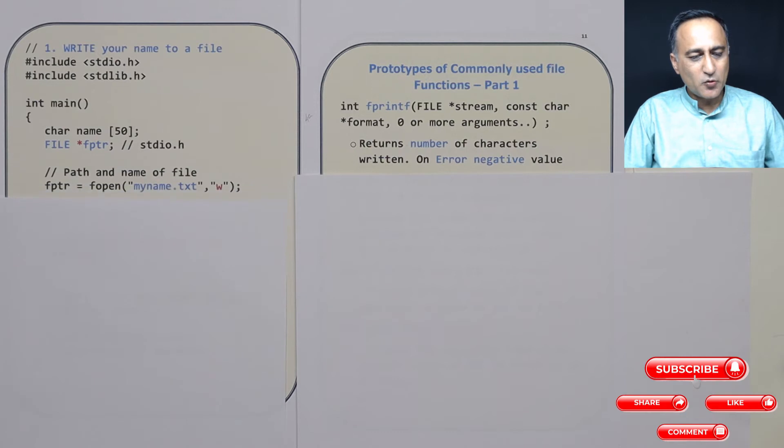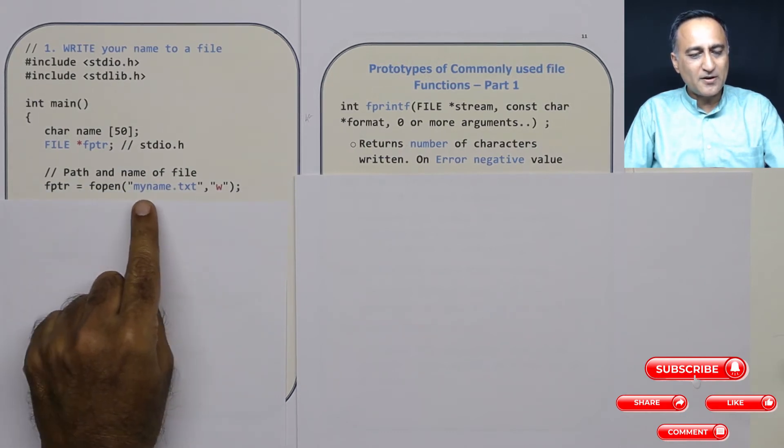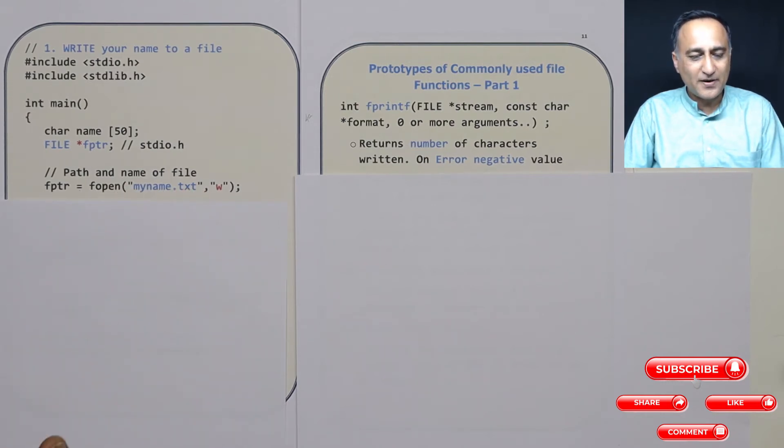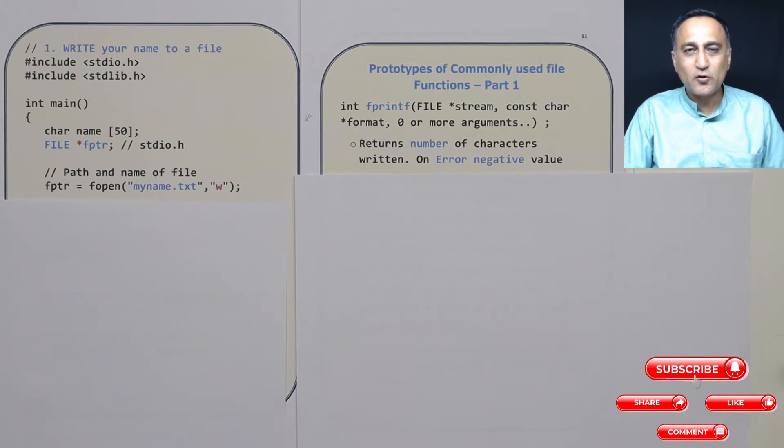First thing what I am going to do here is I am going to say fptr is assigned fopen. File is myname.txt. Whatever is within the double quote is the name of the file. I am saying w because I have to write my name onto the disk. If I am reading it, it will be r.